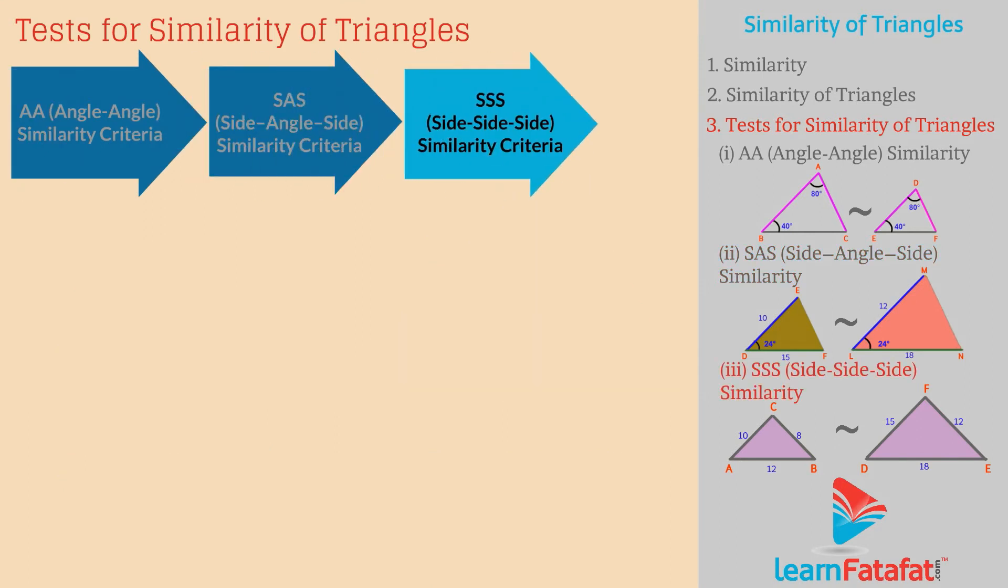SSS side-side-side similarity. If ratio of corresponding sides of two triangles are proportional, then the two triangles are similar.